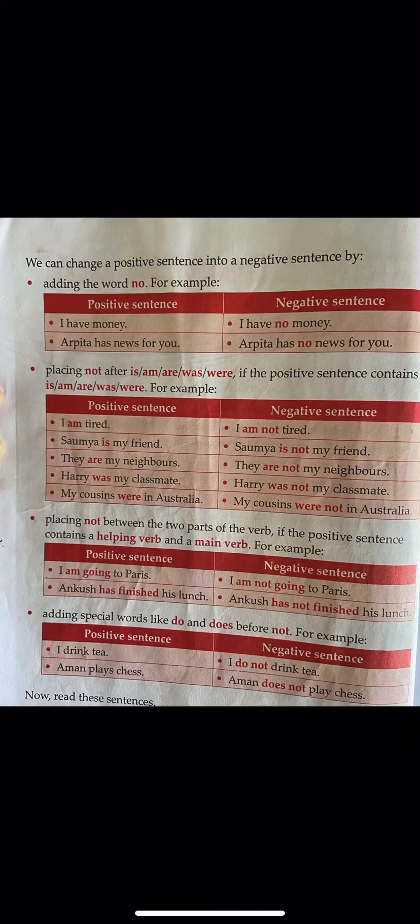Now let us move to the next part: sentences can be positive or negative. What is a positive sentence? When there is no 'no' or 'not' in your sentence, it is positive — also called an affirmative sentence. If there is 'no', 'not', 'never', or 'nothing' in the sentence, then it is a negative sentence.